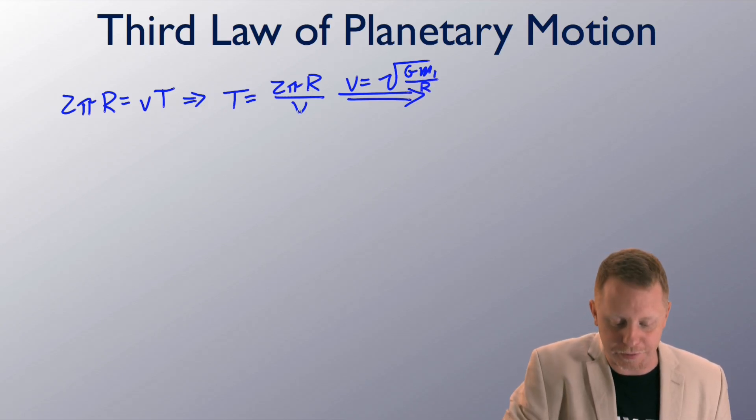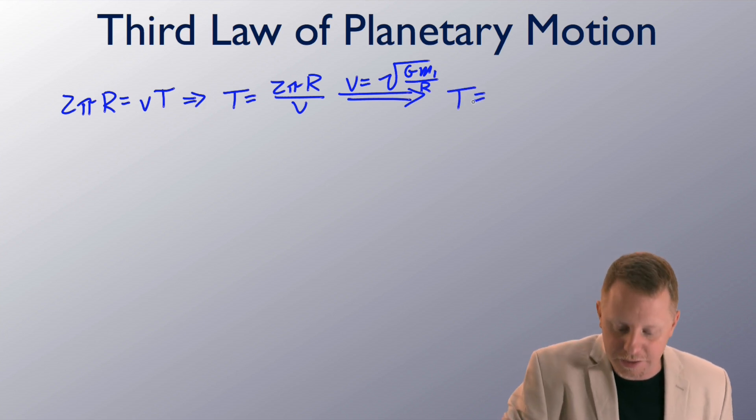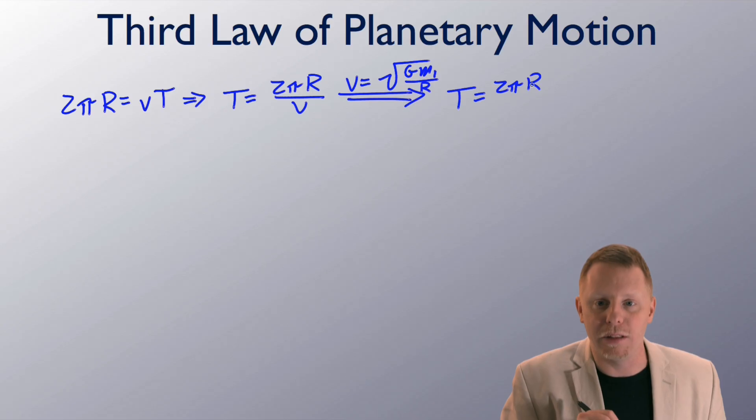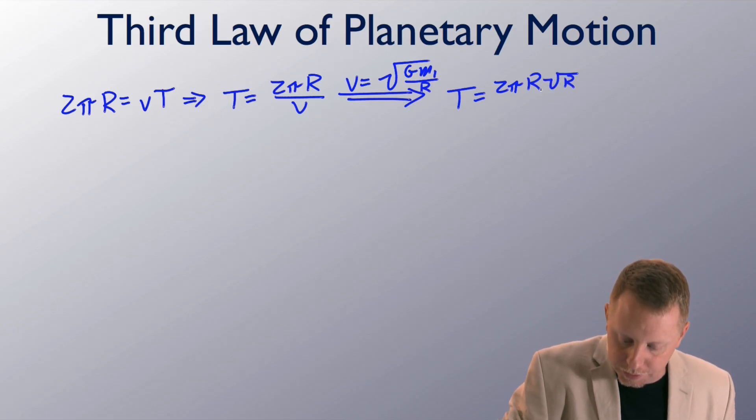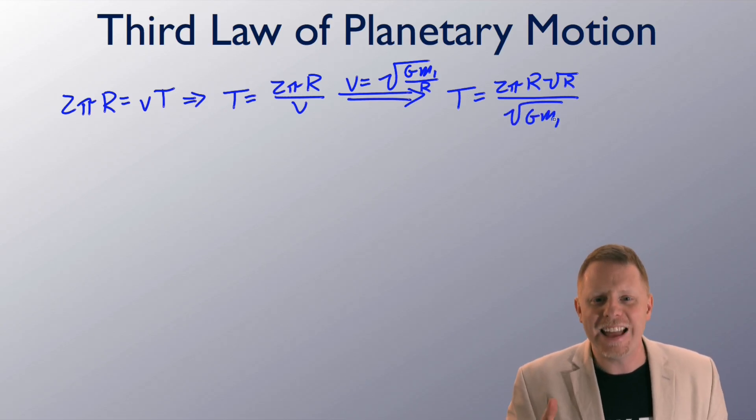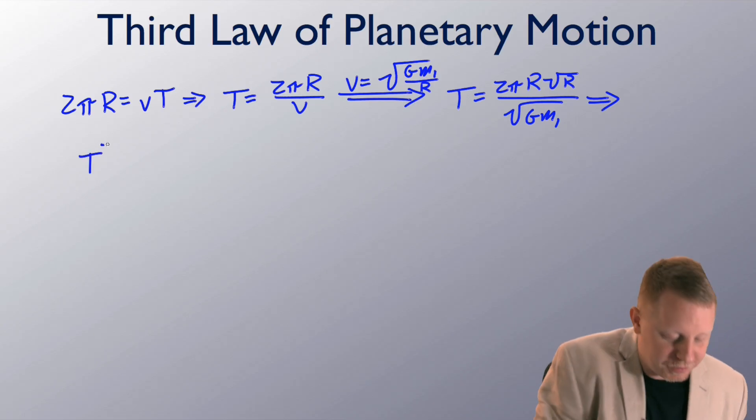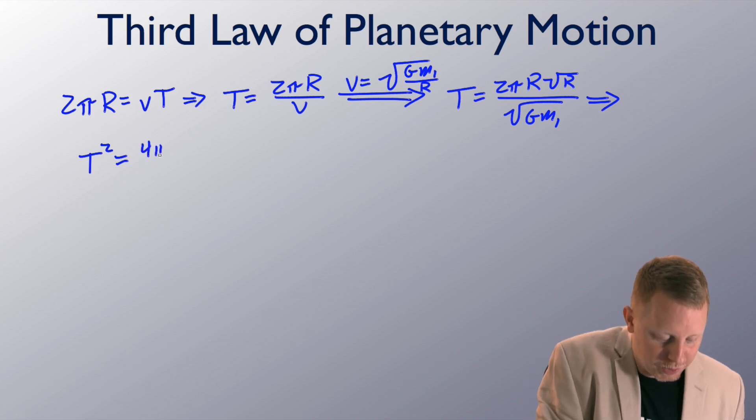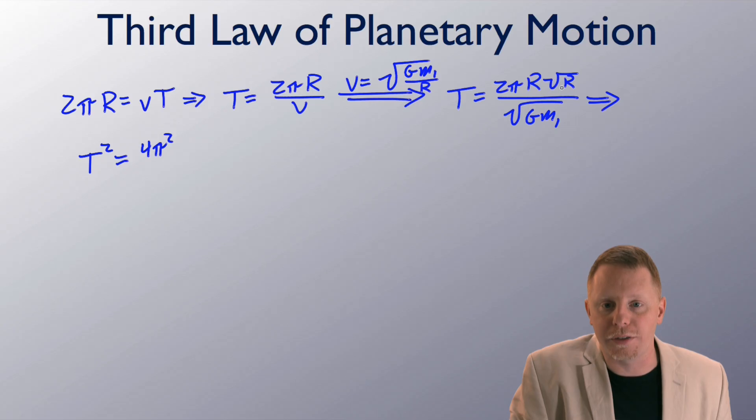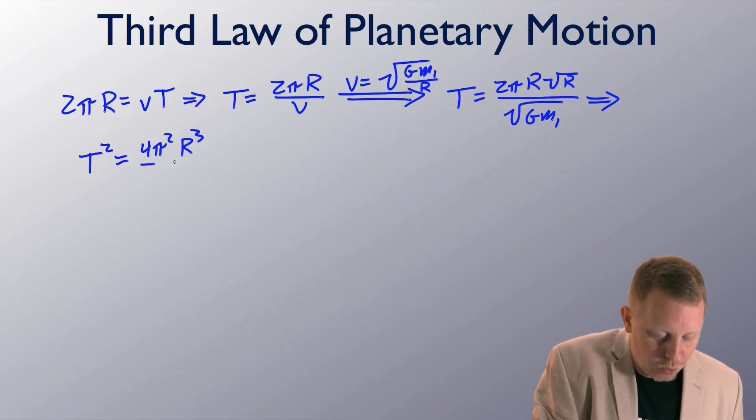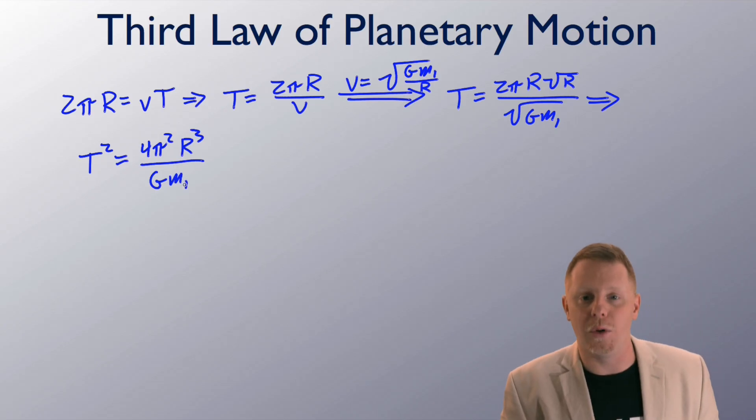So I could substitute that in for v, and find that period then is 2 pi, capital R, square root of R, all over square root of G, m1. And that's looking a little daunting. We've got a lot of radicals there. So what I'm going to do to simplify this, is I'm just going to square both sides of our equation. This implies then, as I square both sides, that t squared on the left hand side must be equal to, well we'll have 4 pi squared, r times square root of R is going to give us R cubed over G, m1.